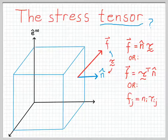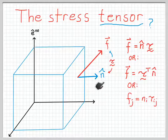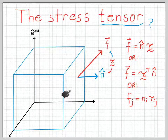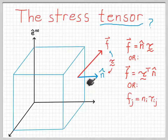The stress tensor is a useful concept for describing the state of forces within a material, and you can find all sorts of excellent videos on YouTube and elsewhere describing the stress tensor. Typically, the stress tensor is described as giving us a relationship between a force acting on some surface in a fluid — possibly the surface of the fluid or possibly a fictitious surface within the fluid — and the vector normal to that surface that describes the orientation of the surface.